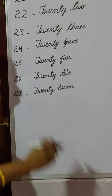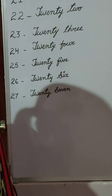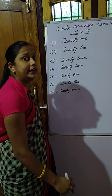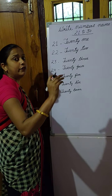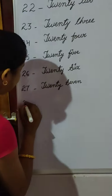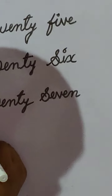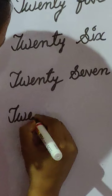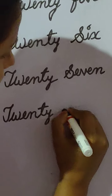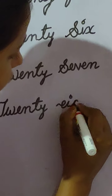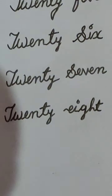Okay. Then, after 27, what do we have to write, children? 28. We have to write the spelling of 28. TWENTY — T, W, E, N, T, Y — 20. Then EIGHT — E, I, G, H, T — 8. TWENTY-EIGHT. 28.